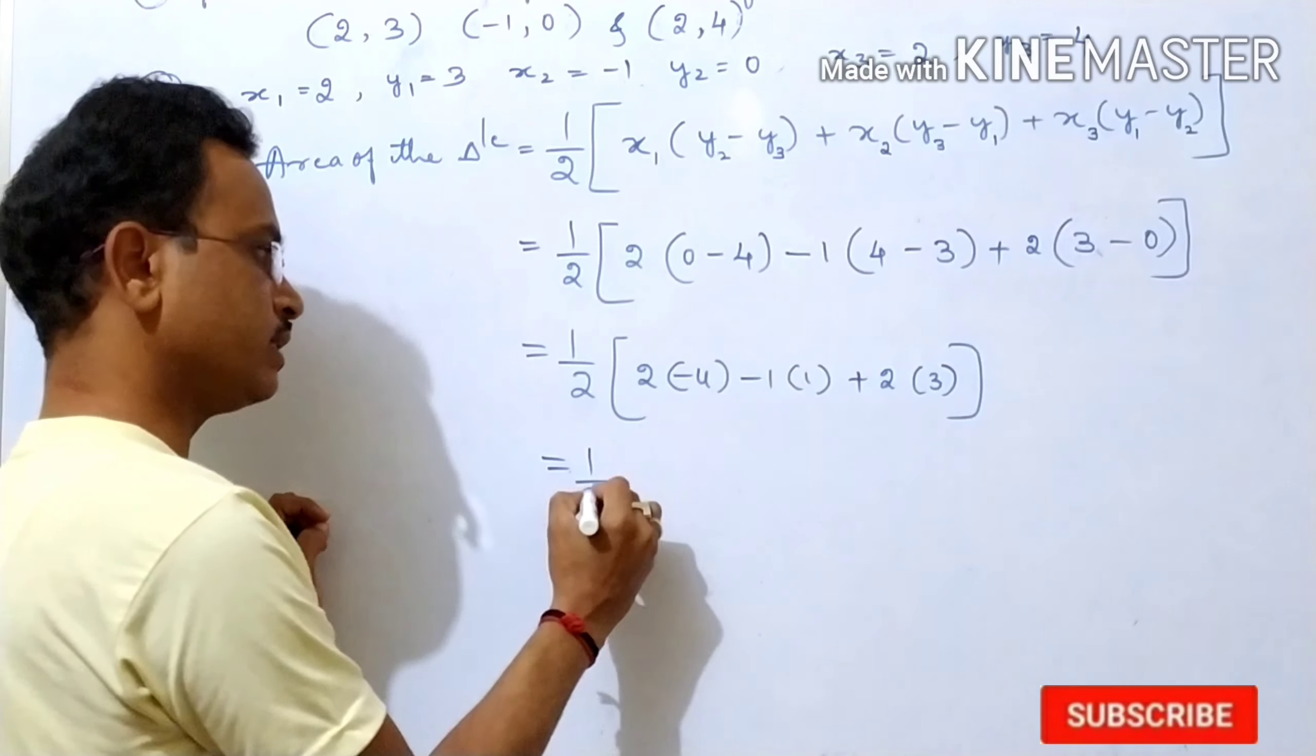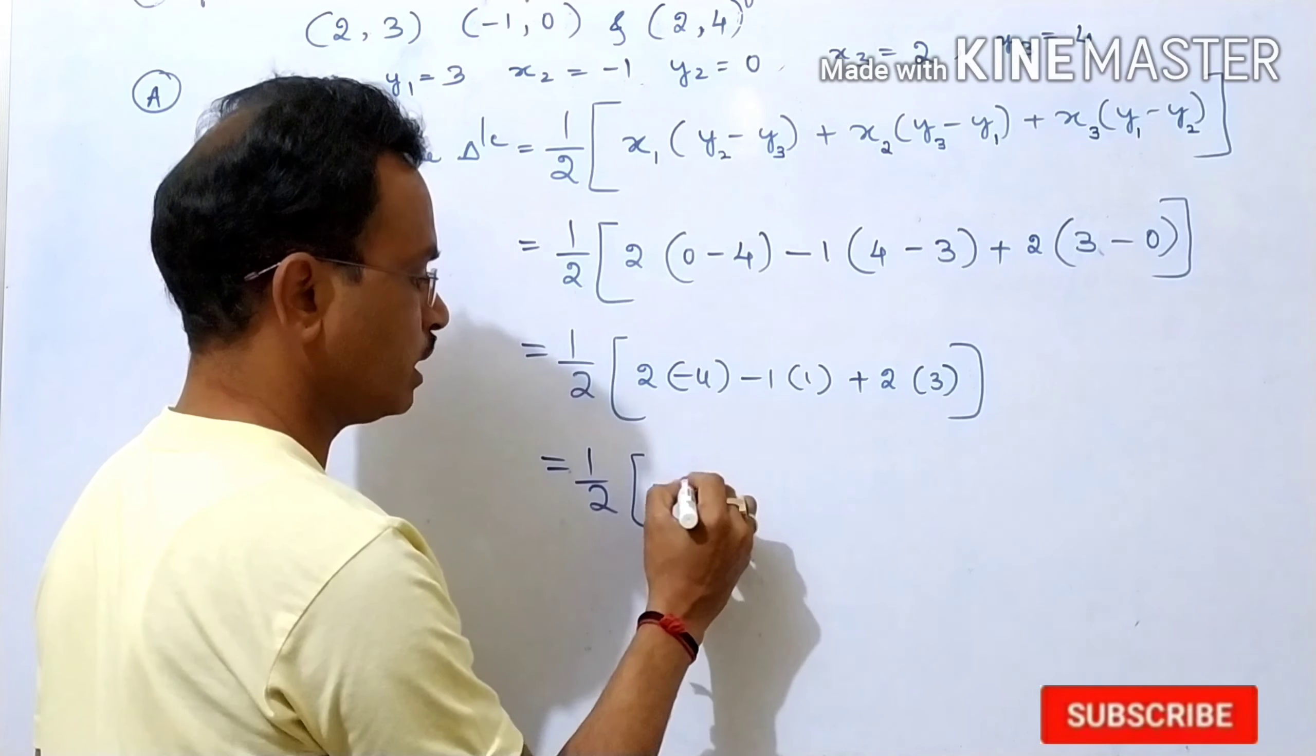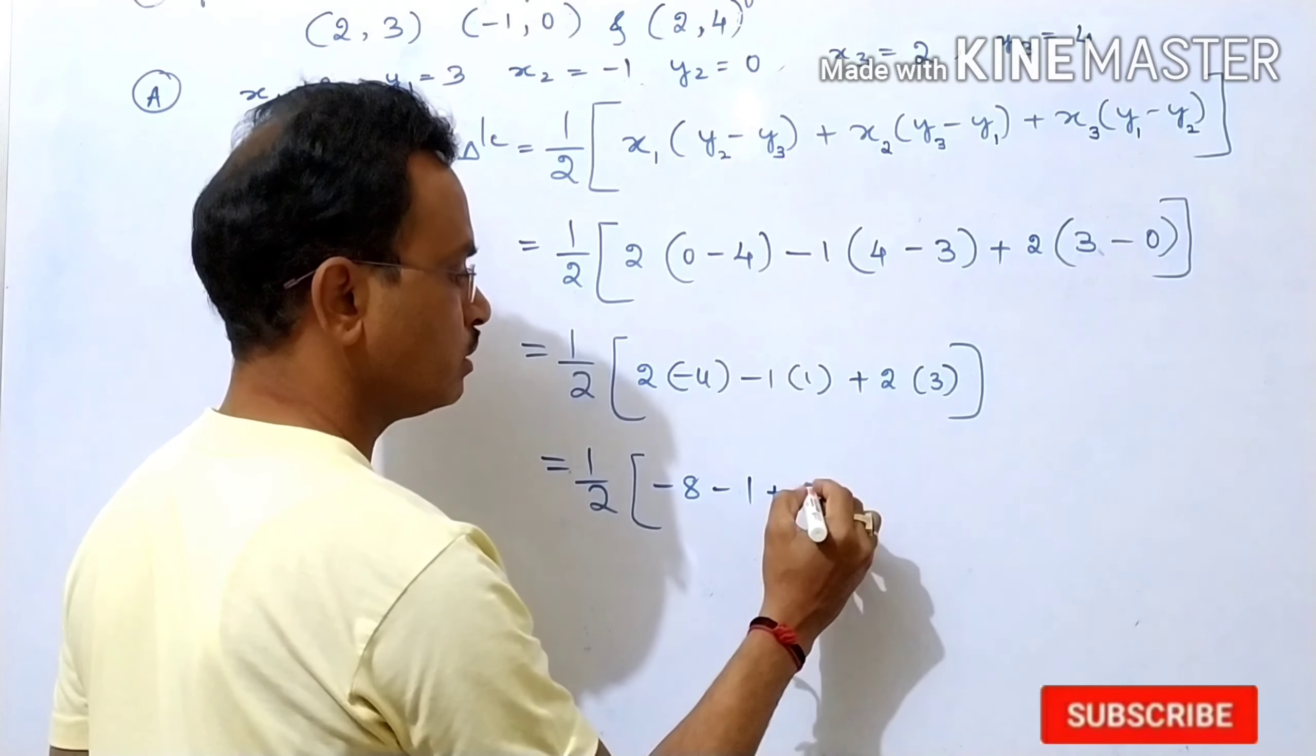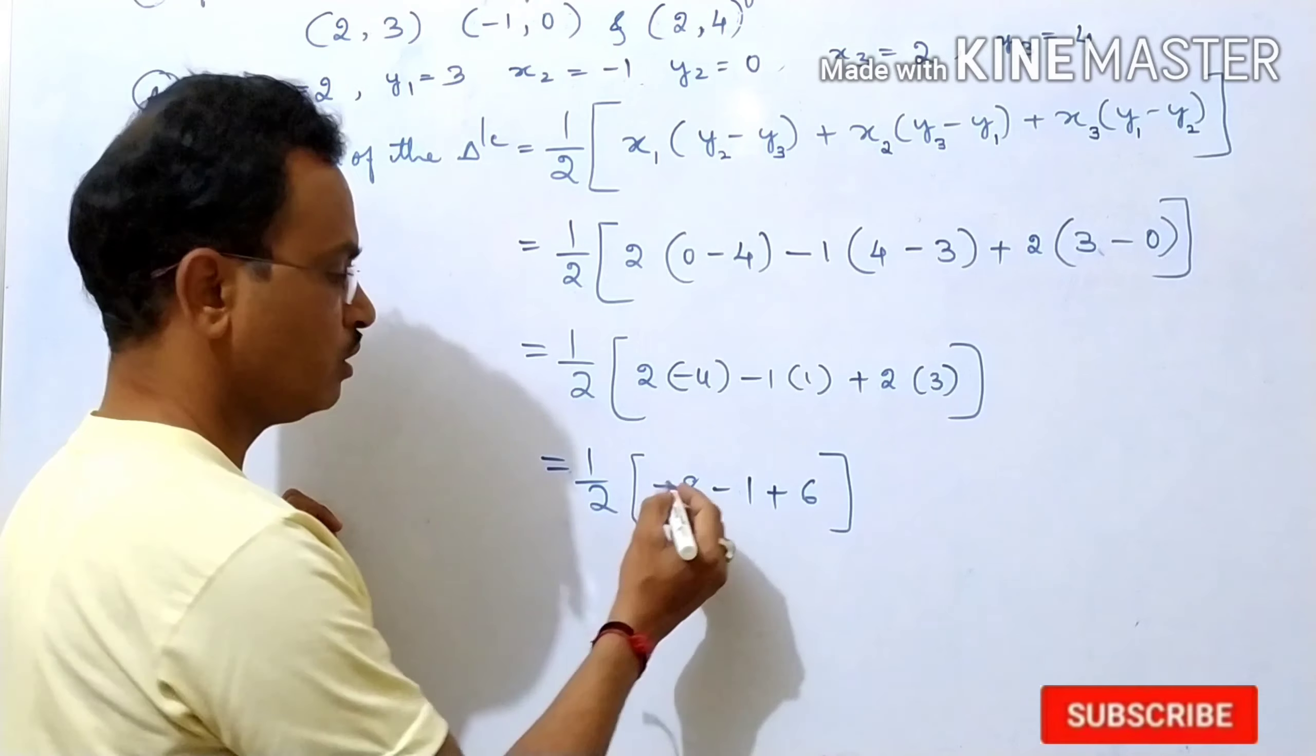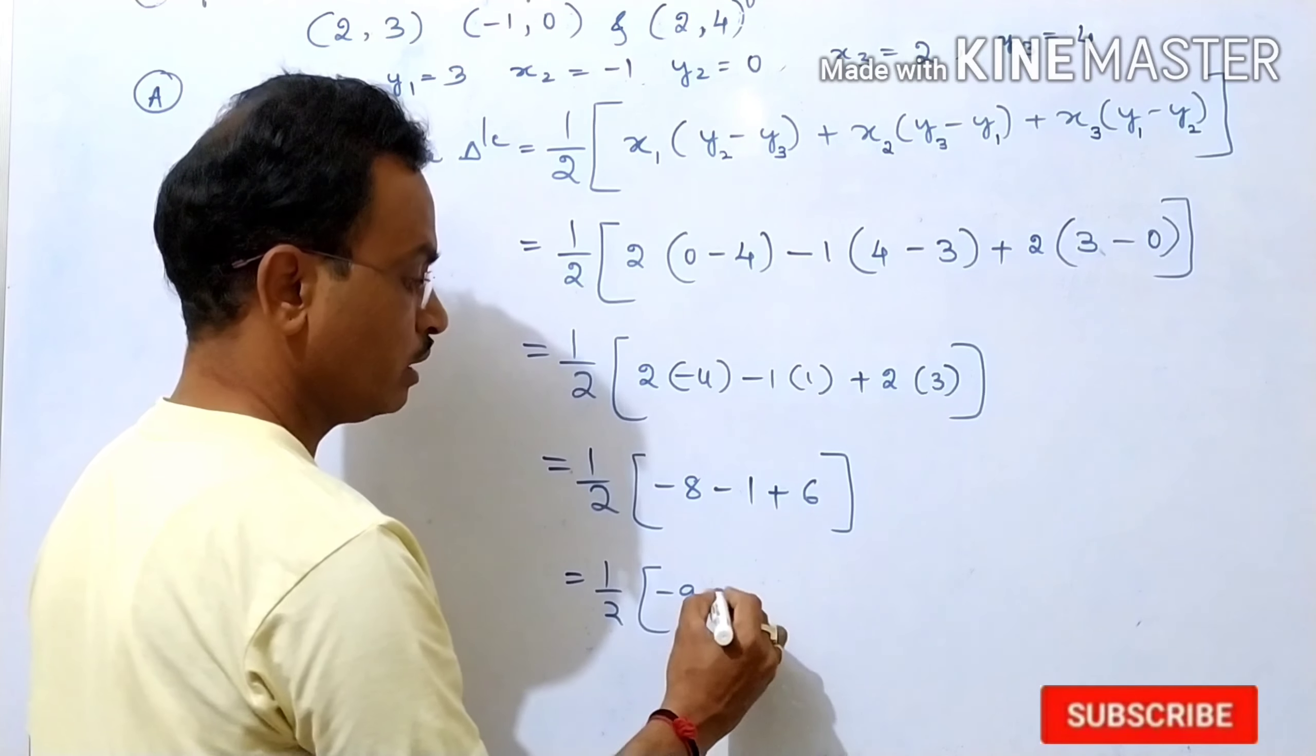Then 1 by 2 as it is. 2, 4's is 8, so minus 8 you should write because minus is there. Then minus 1 into 1 is 1, then plus 2, 3's is 6. Now, here first two terms are negative sign. If both are negative, keep minus sign and add. Minus 9, 8 plus 1 is 9, then plus 6.